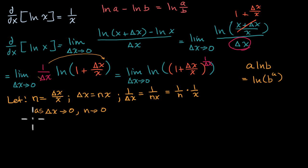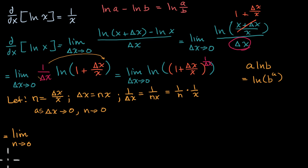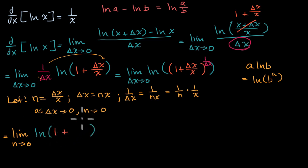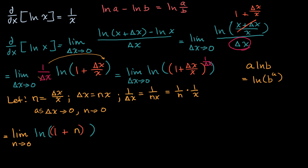So now let's do our change of variable. If we make the substitutions, instead of taking the limit as delta x approaches zero, we are now going to take the limit as n approaches zero of the natural log of one plus n, and all of that is raised to the one over n times one over x. That's what one over delta x equals — the same thing as one over n times one over x.